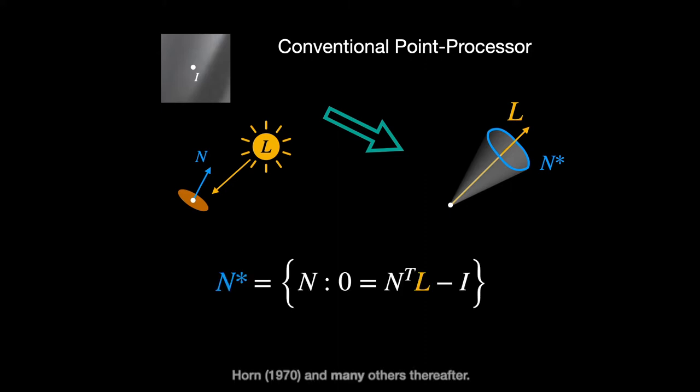This approach requires knowing the light direction. It either needs to be given beforehand or somehow inferred along with the shape. This is in conflict with human perception, which seems to readily infer shape without precise estimates of lighting.